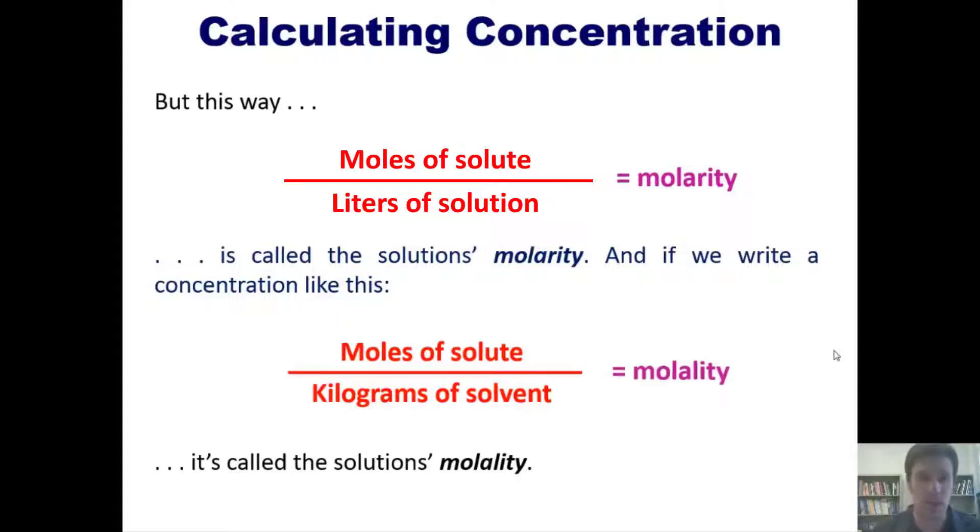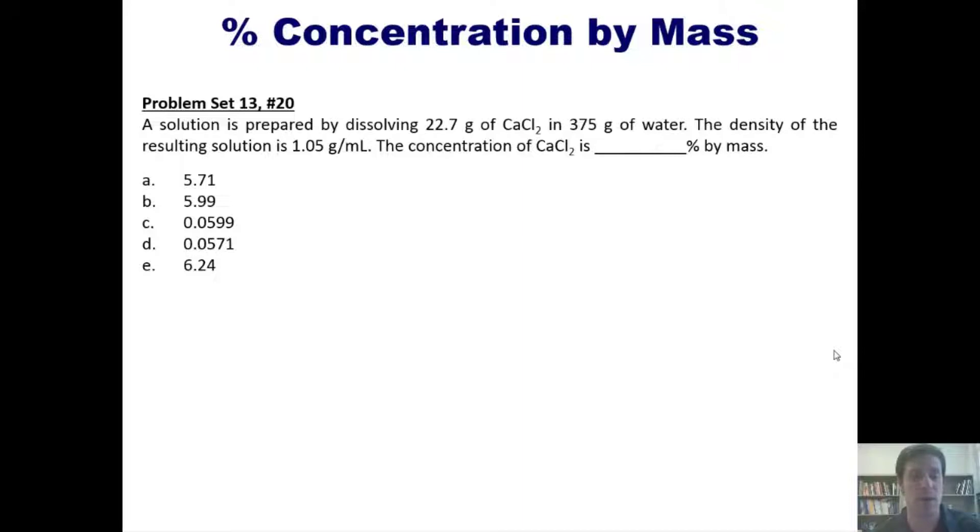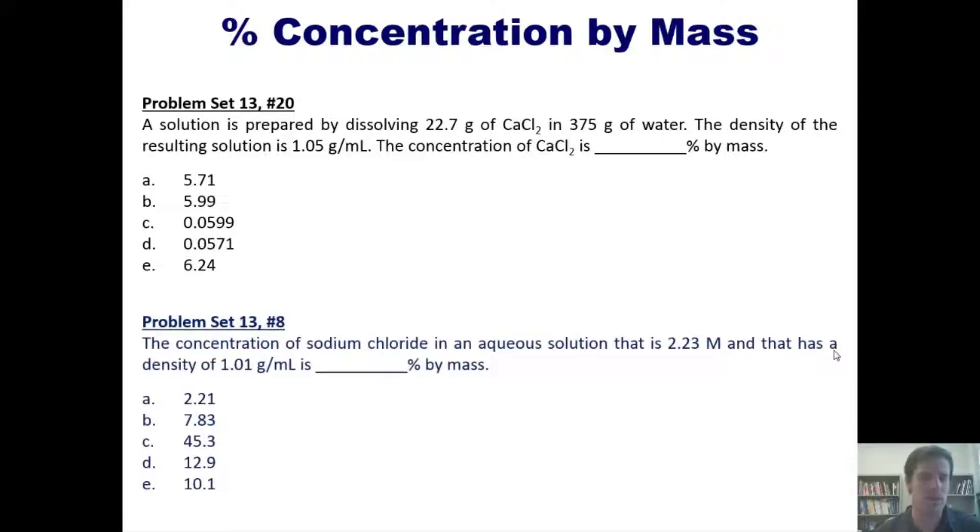Let's take a look at some problems. A solution is prepared by dissolving 22.7 grams of CaCl2 in 375 grams of water. The density of the resulting solution is 1.05 g/mL. The concentration of CaCl2 is blank percent by mass. I'm not going to do this for you, but I will post a link to a separate video. Here's another problem: the concentration of NaCl in aqueous solution is 2.23 molar with a density of 1.01 g/mL. It is blank percent by mass.